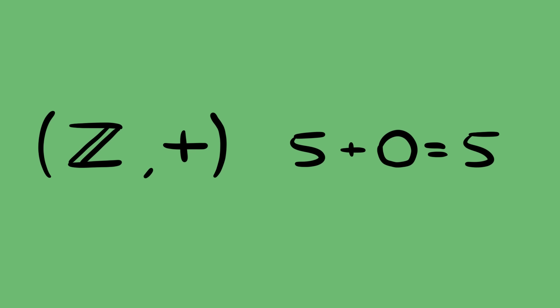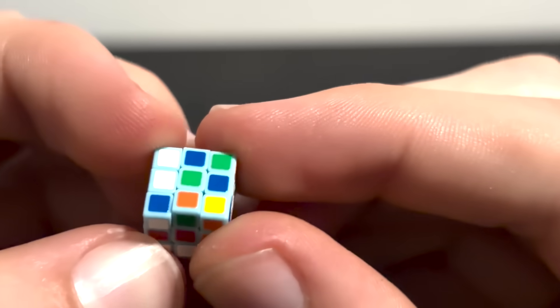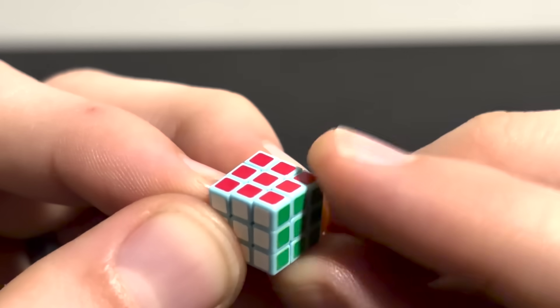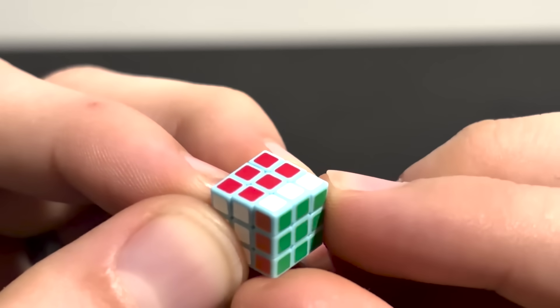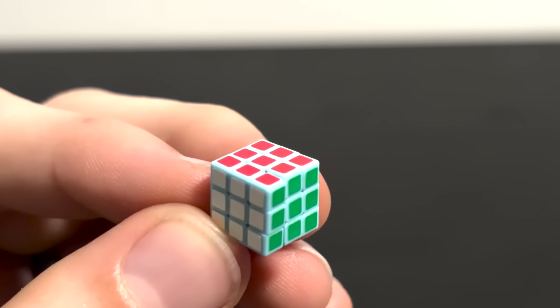Another interesting group is the Rubik's Cube, specifically the set of all moves along with composition of those moves. You can always undo a move, so every move has an inverse. Doing nothing changes nothing, so you have an identity, and you can figure out the rest.